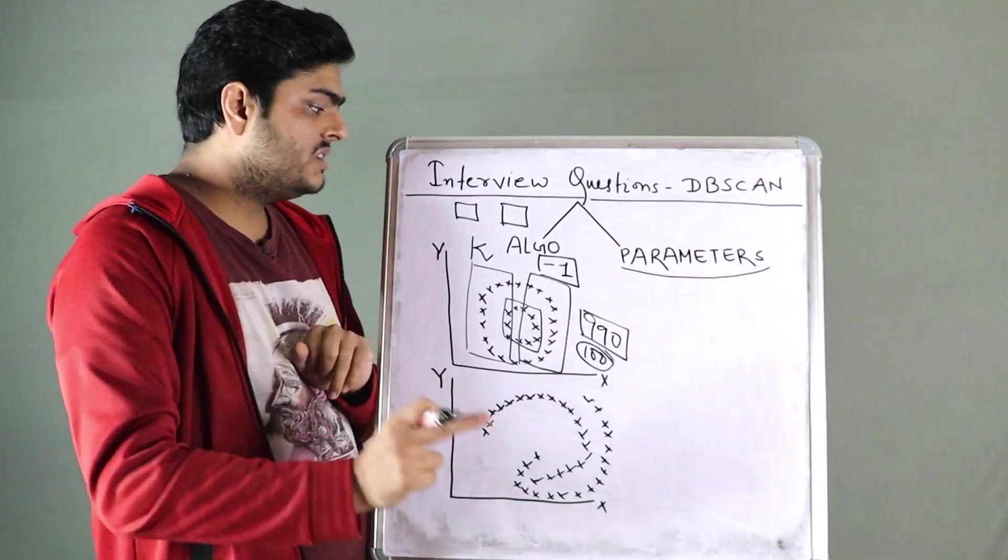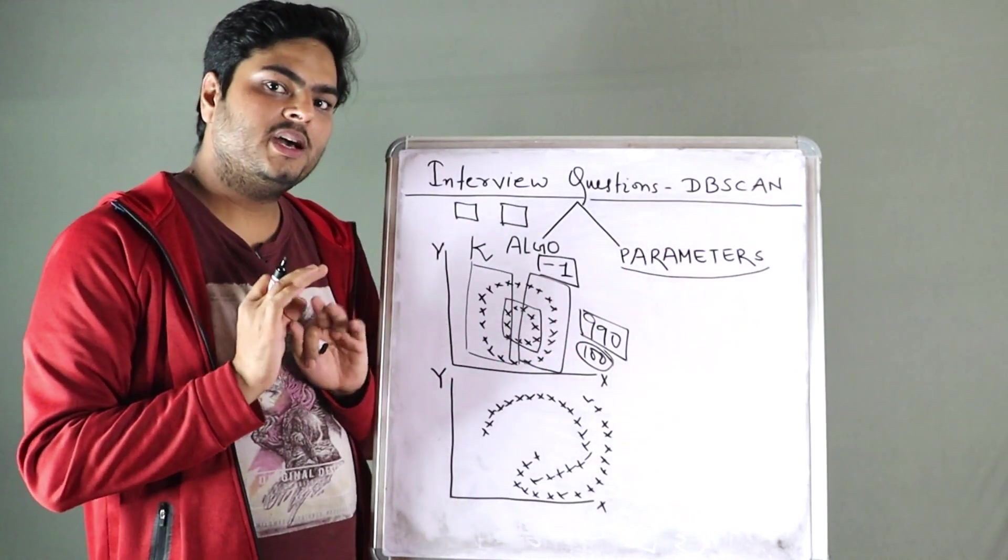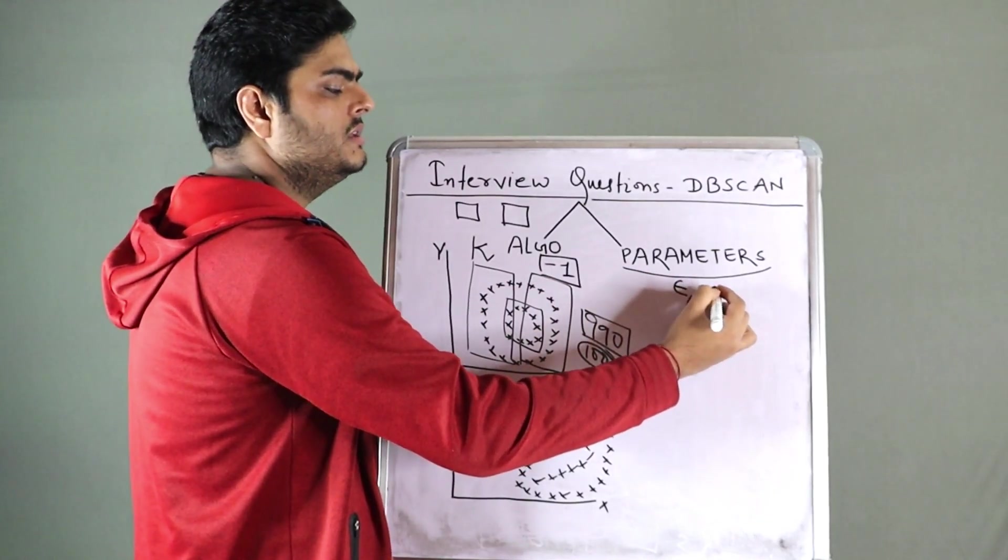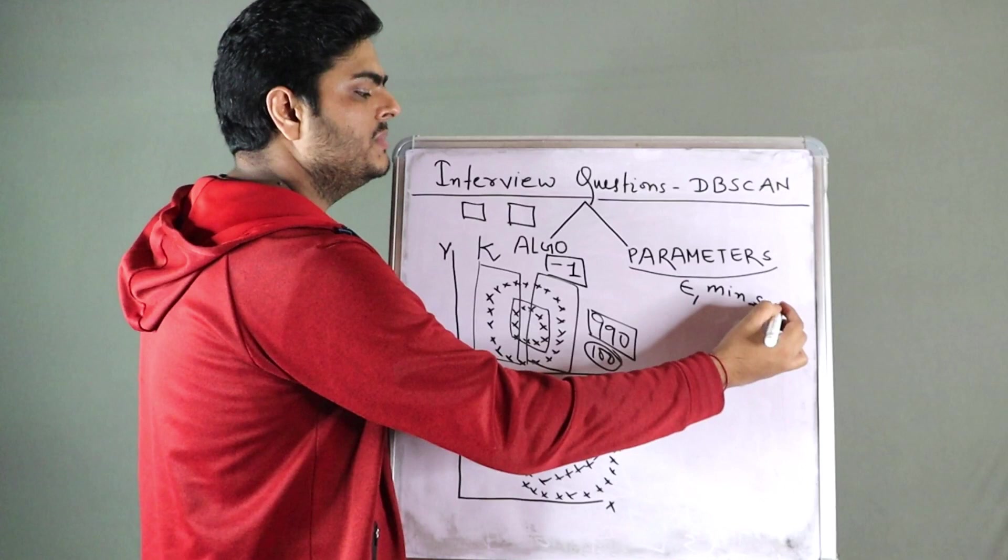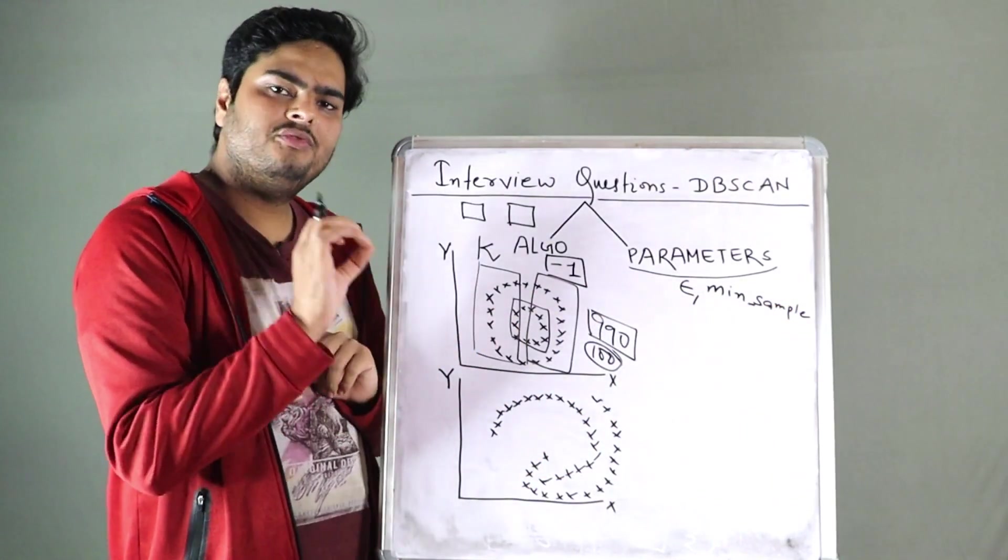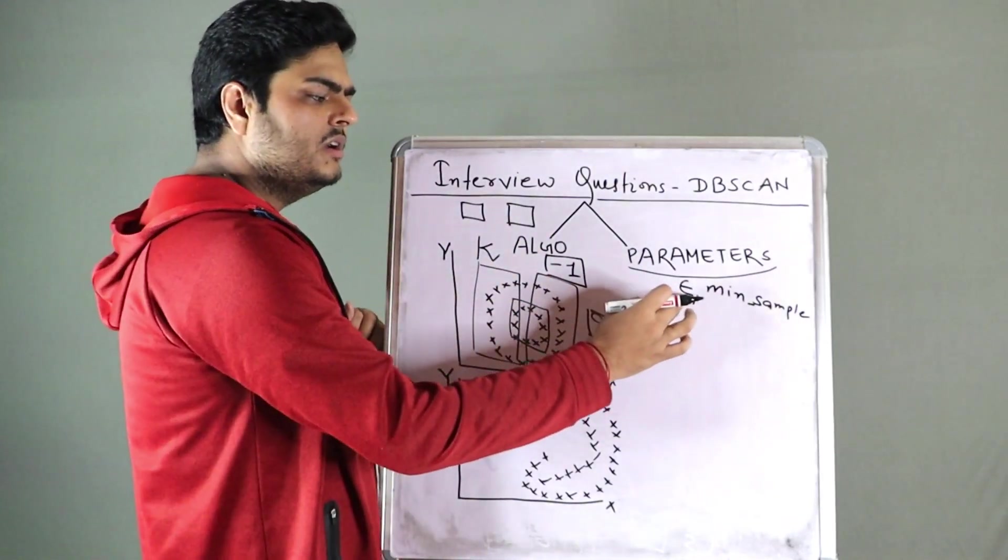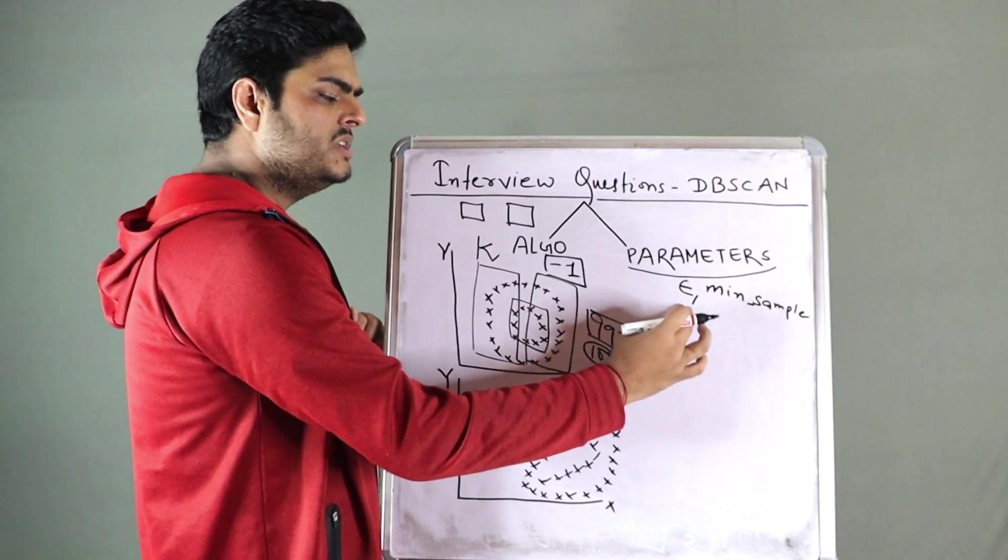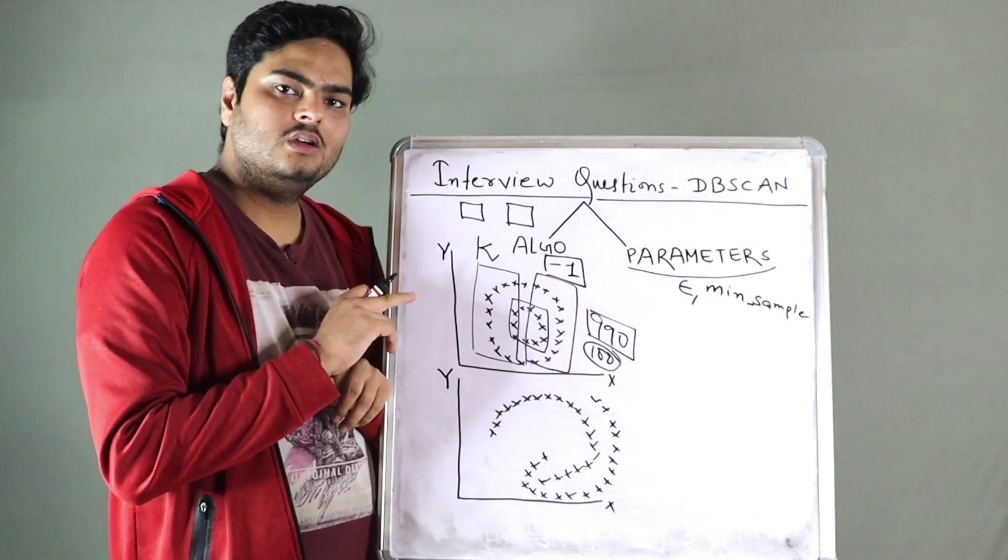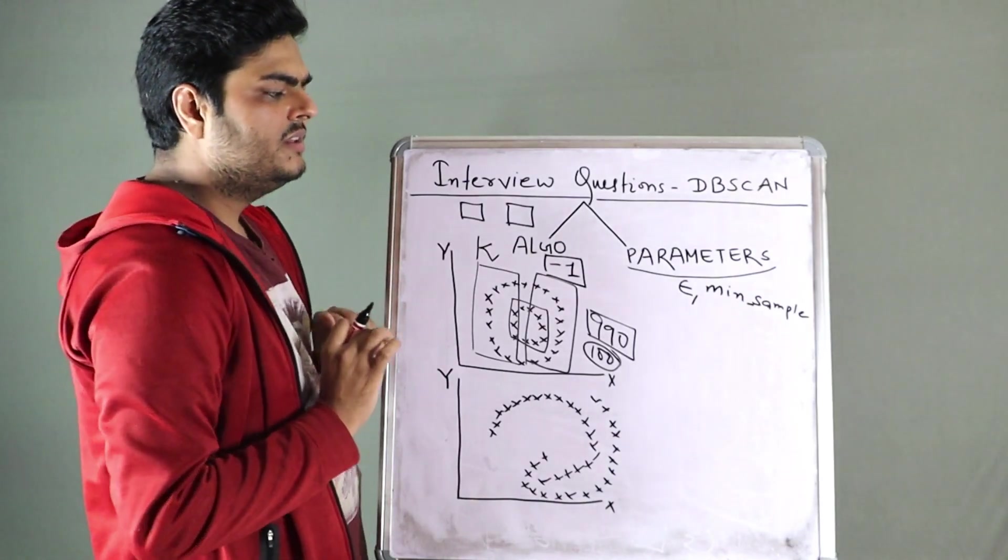Another area and more important is parameters in density based or DB scan cluster. One more disadvantage I want to add here, guys. It is very sensitive to parameters. So what are the parameters in your model? One is called epsilon and another is called minimum sample, minimum sample size or minimum data point. Your clusters are very sensitive to these two things. So if you say epsilon is equal to 3 and next iteration you say epsilon is equal to 5, it creates a lot of difference in clustering. So that also can be taken as one downside of this clustering.